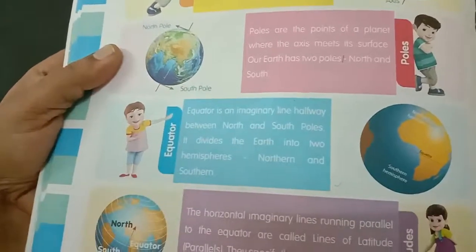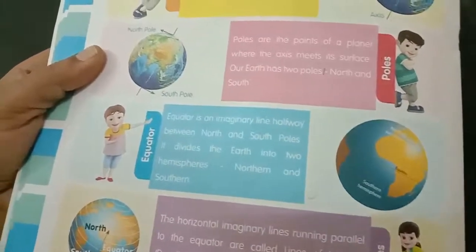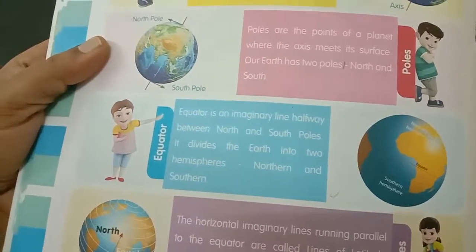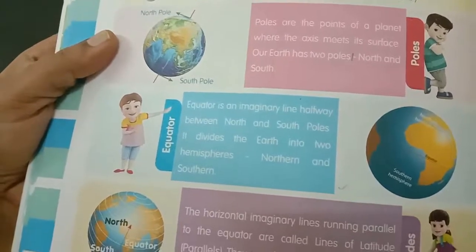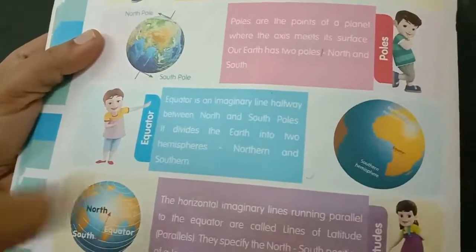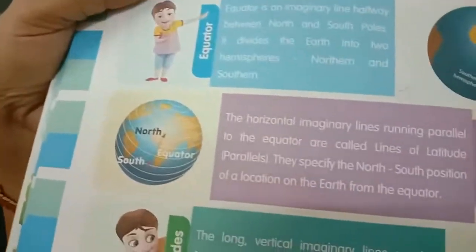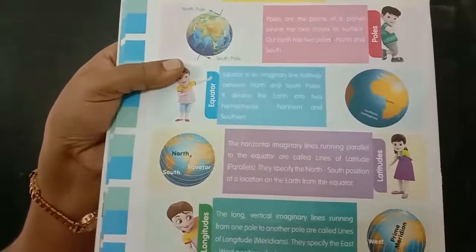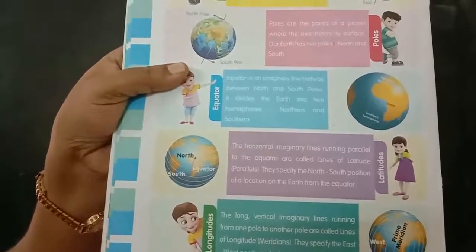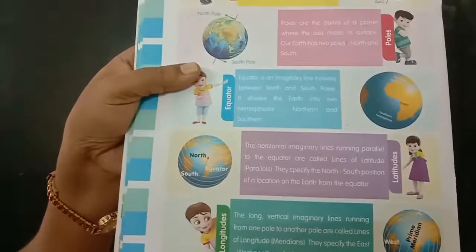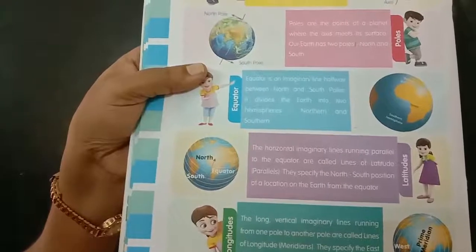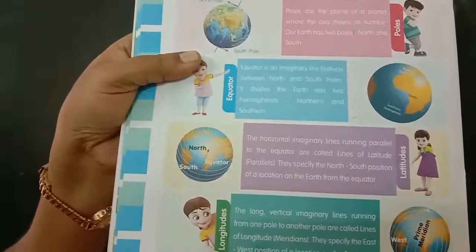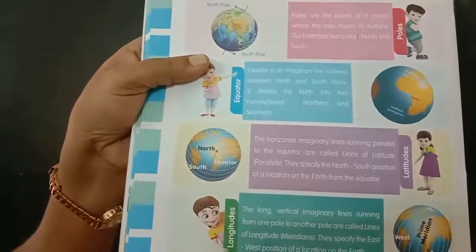Third one, equator — an imaginary line halfway between the North and South Poles. It divides the earth into two hemispheres: Northern Hemisphere and Southern Hemisphere. Next one, latitudes — the horizontal imaginary lines running parallel to the equator are called lines of latitude. They specify the north-south position of a location on the earth from the equator.